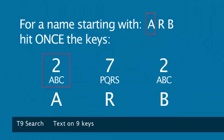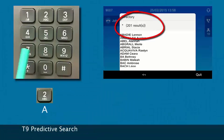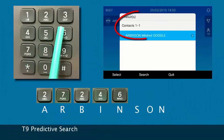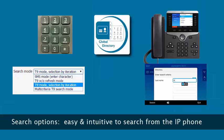With T9, just hit once the key that contains the letter you are searching, then hit the key with the second letter, and so on. The keypad search options make it easy and intuitive to search Global Directory directly from the IP phone.